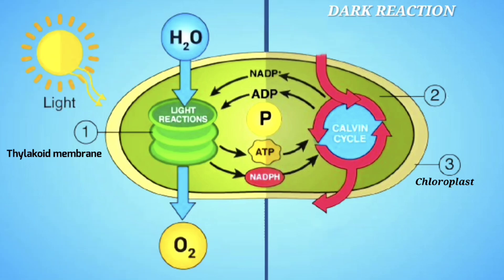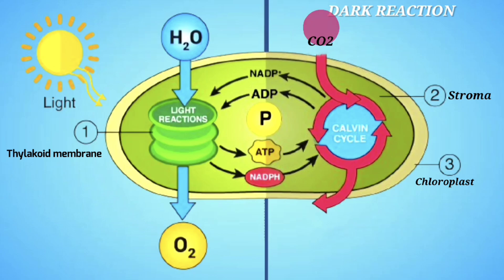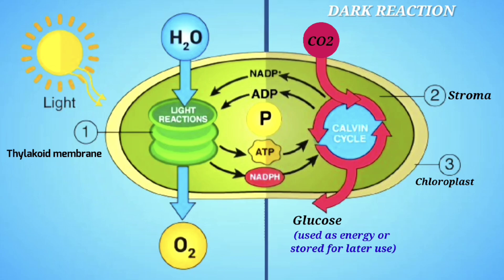Next is the dark reaction, or Calvin cycle, which occurs in the stroma of the chloroplast. Here, ATP and NADPH produced in the light reaction are used to convert carbon dioxide into glucose through a series of enzyme-driven steps. Glucose is then used as energy or stored for later use.